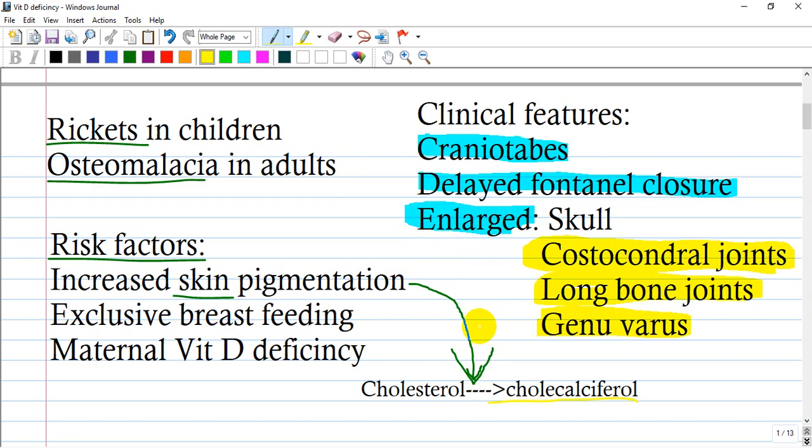This hyperpigmentation with increased melanocytes blocks the entry of UV light. Another risk factor is exclusive breastfeeding, as milk from the breast is not sufficient in vitamin D to meet the increased needs of the child.